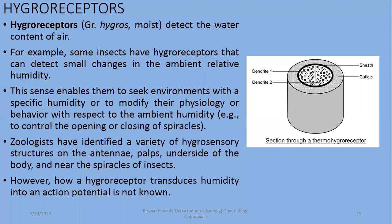Hygroreceptors — 'hygro' refers to the word moist or humidity — are responsible for the detection of water content or humidity in the surrounding environment. For example, some insects have shown hygroreceptors that are responsible for the detection of even small amounts of surrounding relative humidity. This sense enables them to seek environments with a specific humidity or to modify their physiology according to the surrounding environment.